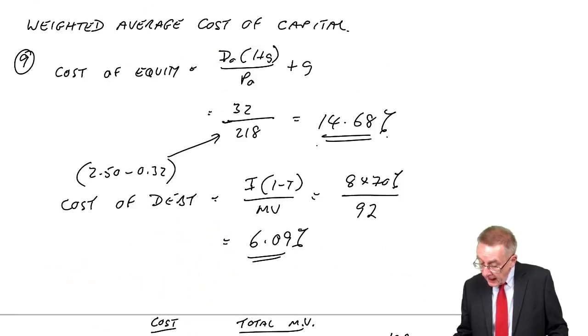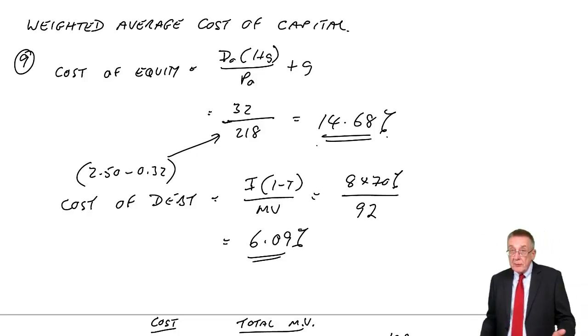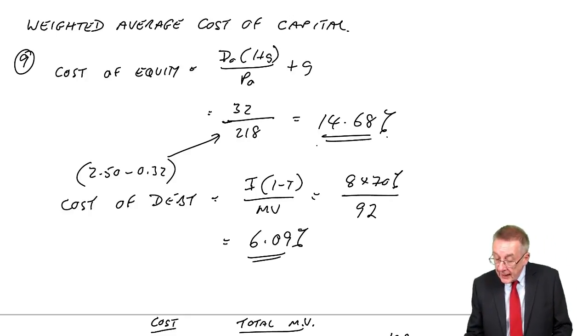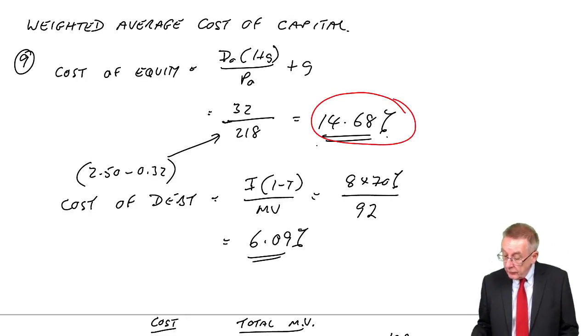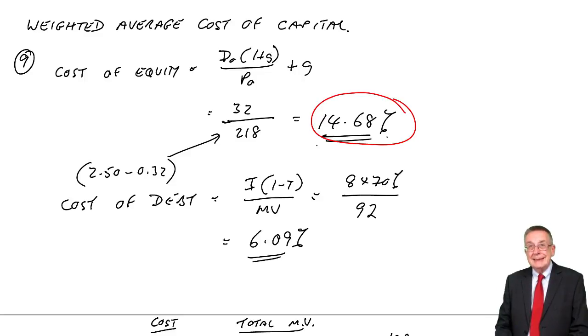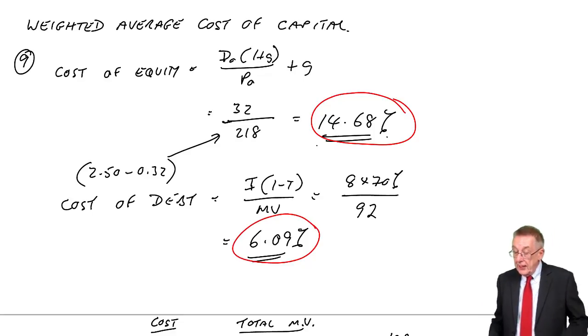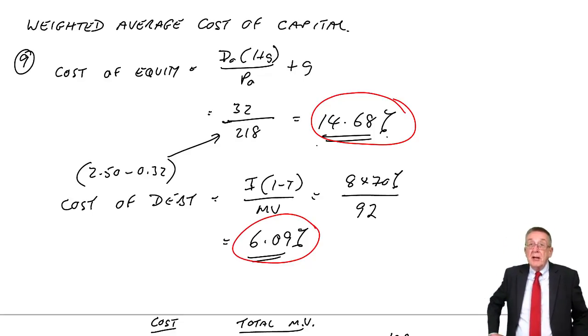But to explain what I'm getting at, in the previous chapter, which I hope you've already been through, we worked out a weighted average cost of capital. We did two examples, but in example nine, which is a nice easy one, we calculated the cost of equity, 14.68. I'm not going to repeat the calculations. We did them all in the previous lecture. We calculated the cost of debt, 6.09.